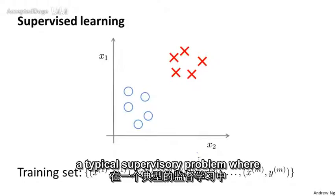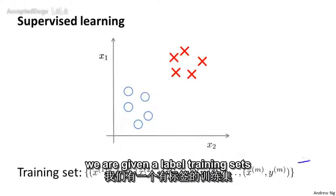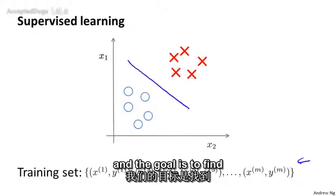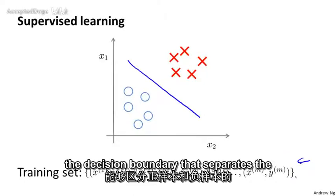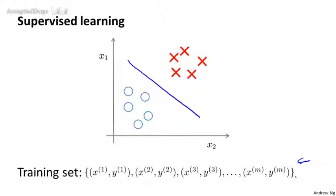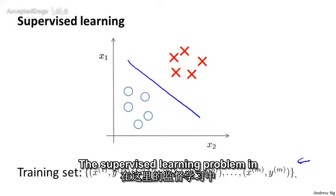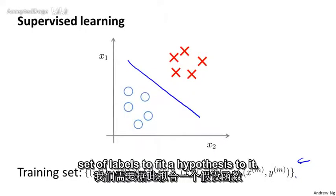So here's a typical supervised learning problem where we're given a labeled training set and the goal is to find the decision boundary that separates the positive labeled examples and the negative labeled examples. The supervised learning problem in this case is given a set of labels to fit a hypothesis to it.